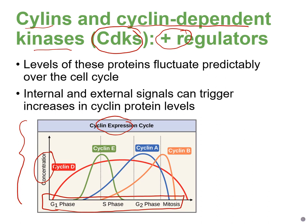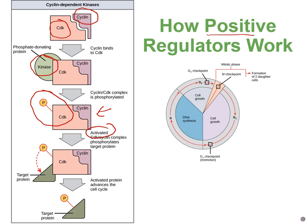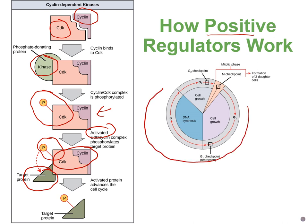Cyclins fluctuate throughout the cell cycle. When cyclin levels are high, they bind to their respective CDK protein. Once that binding occurs, a kinase triggers phosphorylation of the CDK-cyclin complex, making it active. The activated CDK-cyclin complex then phosphorylates target proteins, and these target proteins allow advancement through the cell cycle.